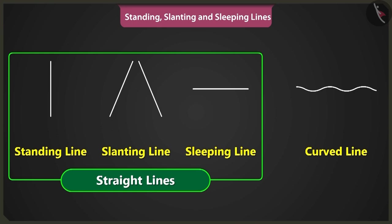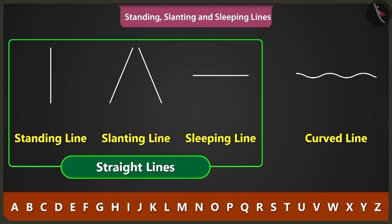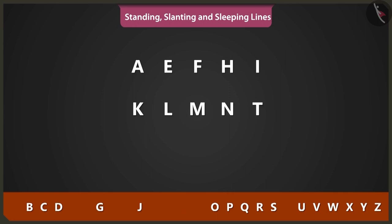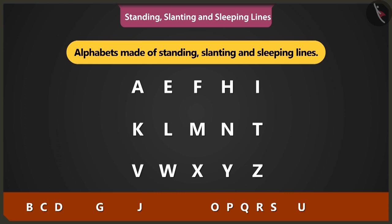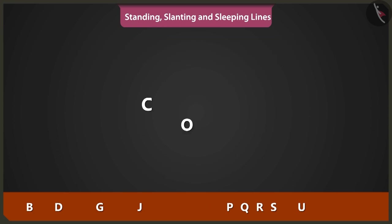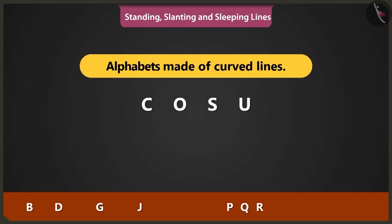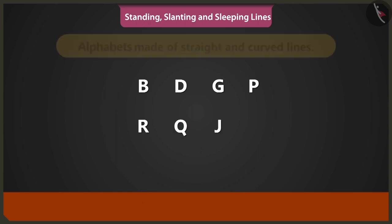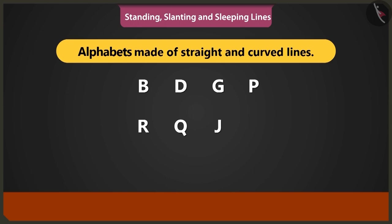Apart from drawing pictures, we can also use these lines to write ABCD. Yes, Bittu. The alphabets A, E, F, H, I, K, L, M, N, T, V, W, X, Y and Z are made using standing, slanting and sleeping lines. C, O, S and U alphabets are made using curved lines. B, D, G, P, R, Q and J are alphabets made using both straight and curved lines.